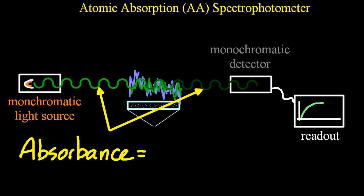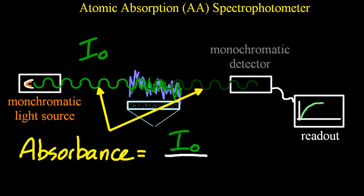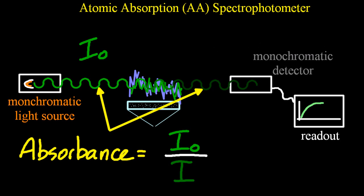And you'd think it would be quite straightforward. All you'd have to do is measure the intensity of the light coming into the flame, and that's traditionally called I sub-zero, and compare that to the intensity of the light that makes it through the other side of the flame. And that's normally called just I.